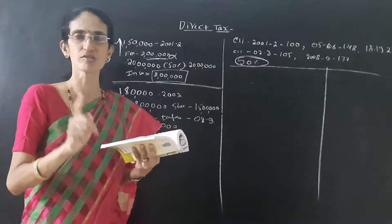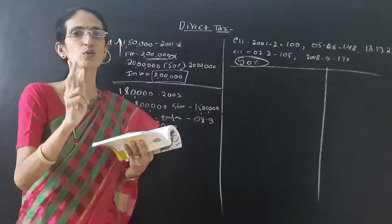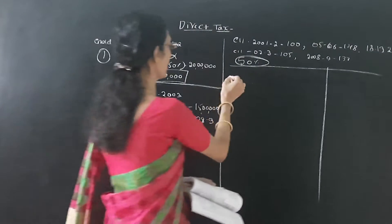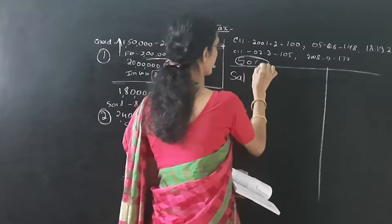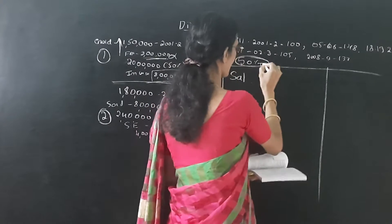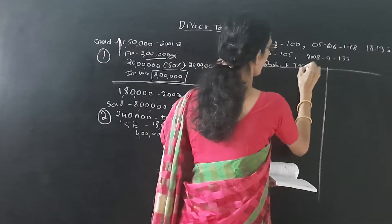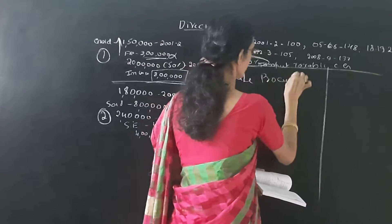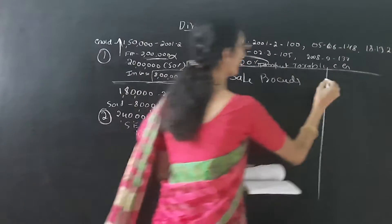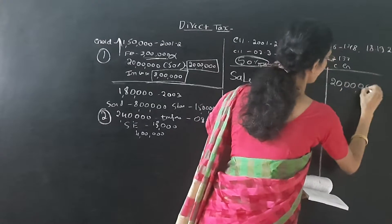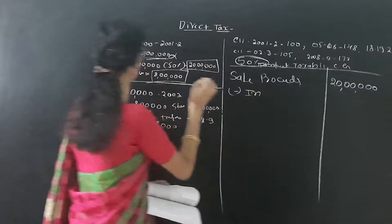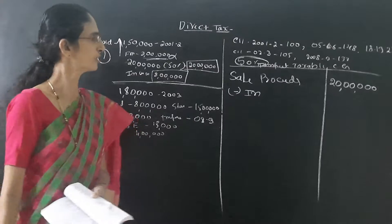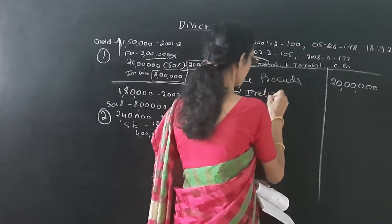As per income tax rules, there should be only one house. If there is two house, then that deduction should be made proportionately. We can see while solving the problems. First, we have to take into consideration computation of taxable capital gain under that sale proceeds. It is long term because it is purchased in the year 2001-2002, and it is the year 2018. Here we have to write it is long term.